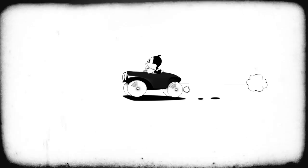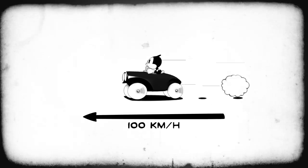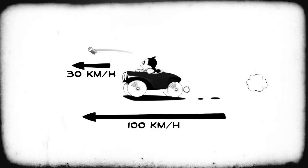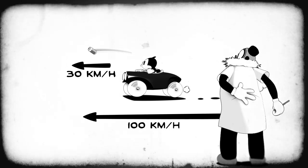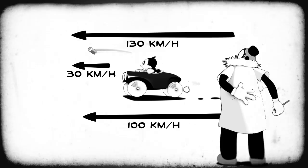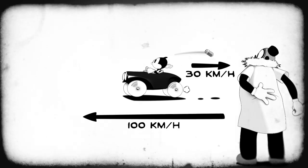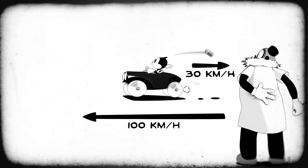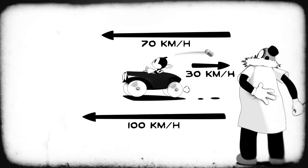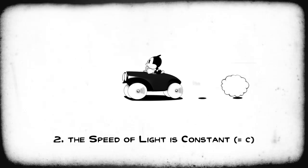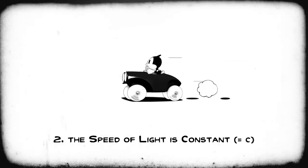Everyday experience tells us that if we drive a car at 100km per hour and we throw a can at 30km per hour, an observer on the ground will see the can passing by at 130km per hour. If the can is thrown in the opposite direction, the observer will see it moving at 70km per hour. But the second principle states that light doesn't behave like a can.